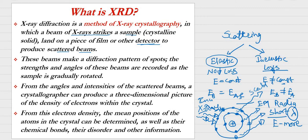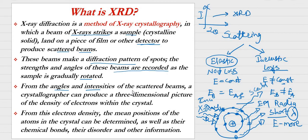This beam makes a diffraction pattern because the X-rays get diffracted from their original path. The strength and angle of these beams are recorded as the sample is gradually rotated — that is the rotating crystal method. From the angles and intensities, we produce a 2-theta vs. intensity graph that is our XRD pattern. A crystallographer can produce a three-dimensional picture of electron density within the crystal.